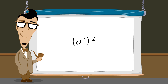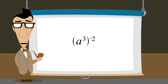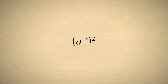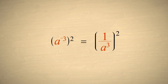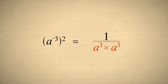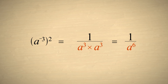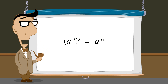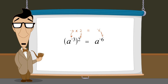Now let's try the same problem except this time we'll make the other exponent negative. We'll start by rewriting a to the negative third as one over a cubed. Squaring one over a cubed is the same as one over a cubed times one over a cubed. To multiply these fractions we multiply their denominators, and we get one over a to the sixth power, which is the same as a to the negative sixth power. Since negative three times two is negative six, it looks like our rule for multiplying exponents still holds.